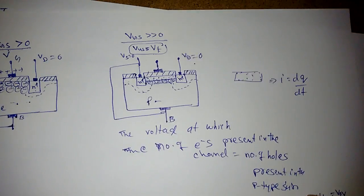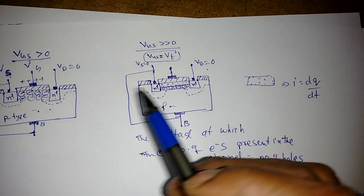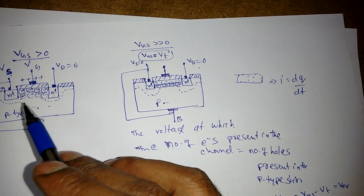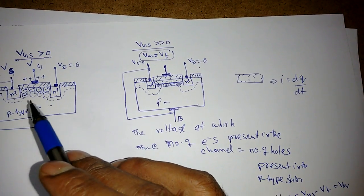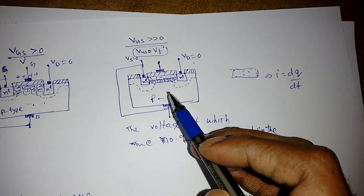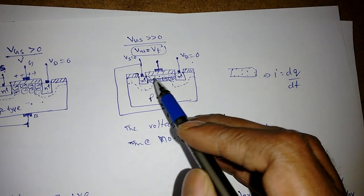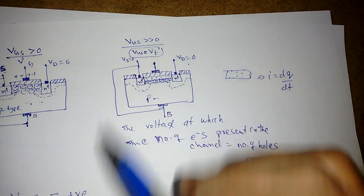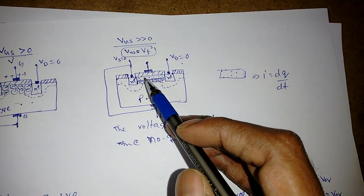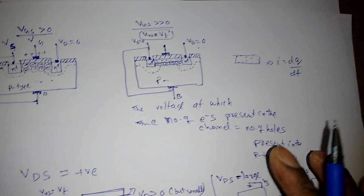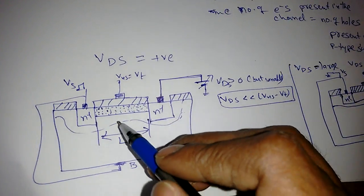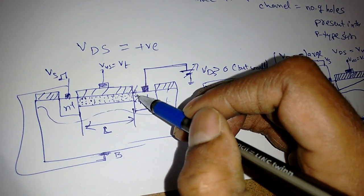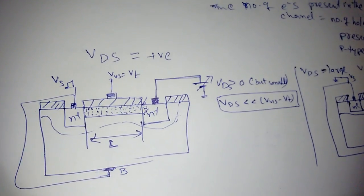This is a continuation of the previous lecture. We have seen how the channel is formed when you apply a positive voltage, which repels the positive charges beneath the oxide layer, leaving behind negative ions or unbound charges. Applying more voltage attracts electrons from the p-type substrate and the n-plus regions. The threshold voltage is the voltage at which the number of electrons in the channel equals the number of holes in the p-type substrate, at which point the channel is formed. This channel has a length L and a width W, and different W/L ratios give different current ratios.